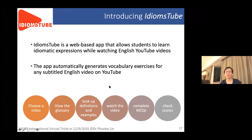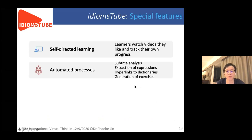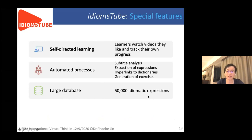So let me be very quick. What does Idiomstrip do? Learners can choose any video they want and view the glossary that the system generates automatically. They can click to see definitions and examples of words, phrases, and expressions, then watch the video and complete multiple choice questions with automatic marking. Special features include self-directed language learning, a completely automated process, and a large database that can identify and teach 50,000 idiomatic expressions in English.